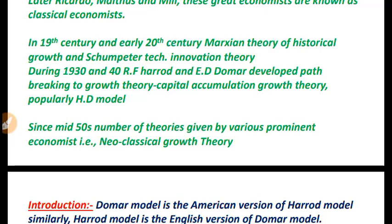In the 1930s and 40s, R.F. Harrod and E.D. Domar developed a path-breaking growth theory, popularly known as the Harrod-Domar model. Harrod developed his model first; Domar developed his around 1946–47. Here we consider Domar first for the sake of convenience and understanding.